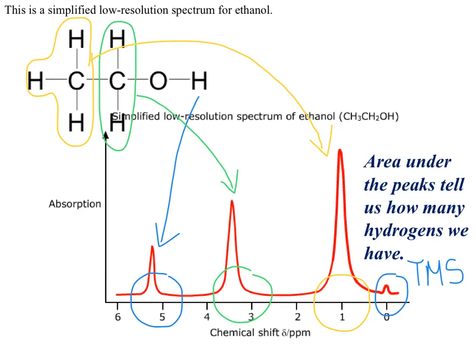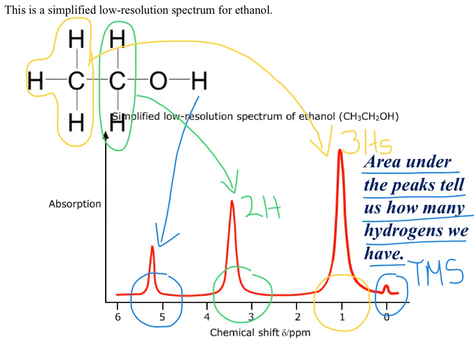It's worth noting beside your spectrum at the top of page 5 that the area under the peak also tells us how many hydrogen atoms we have. We can see just by looking that the peak at 1 part per million is the biggest peak — it will have the biggest area — and this has been caused by our three yellow hydrogens. The peak at between 3 and 4 parts per million has the second largest area, caused by our two green hydrogens. The peak at just over 5 parts per million is the smallest peak with the smallest area, caused by the one hydrogen on the end of the ethanol molecule.